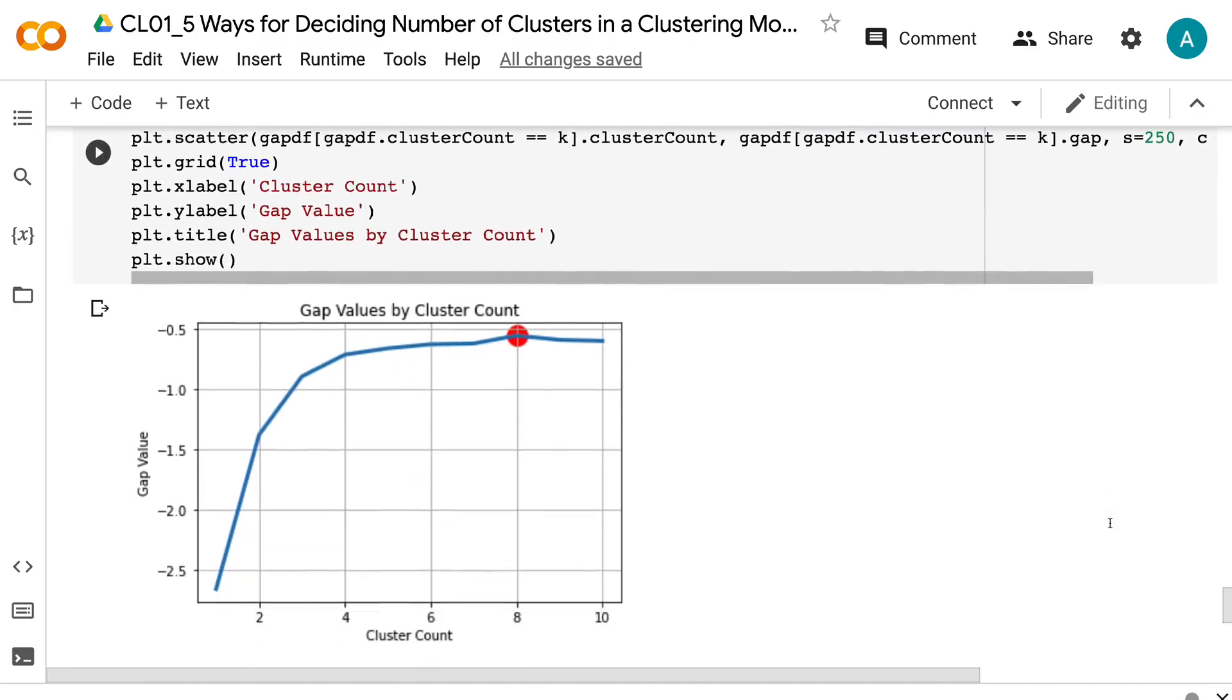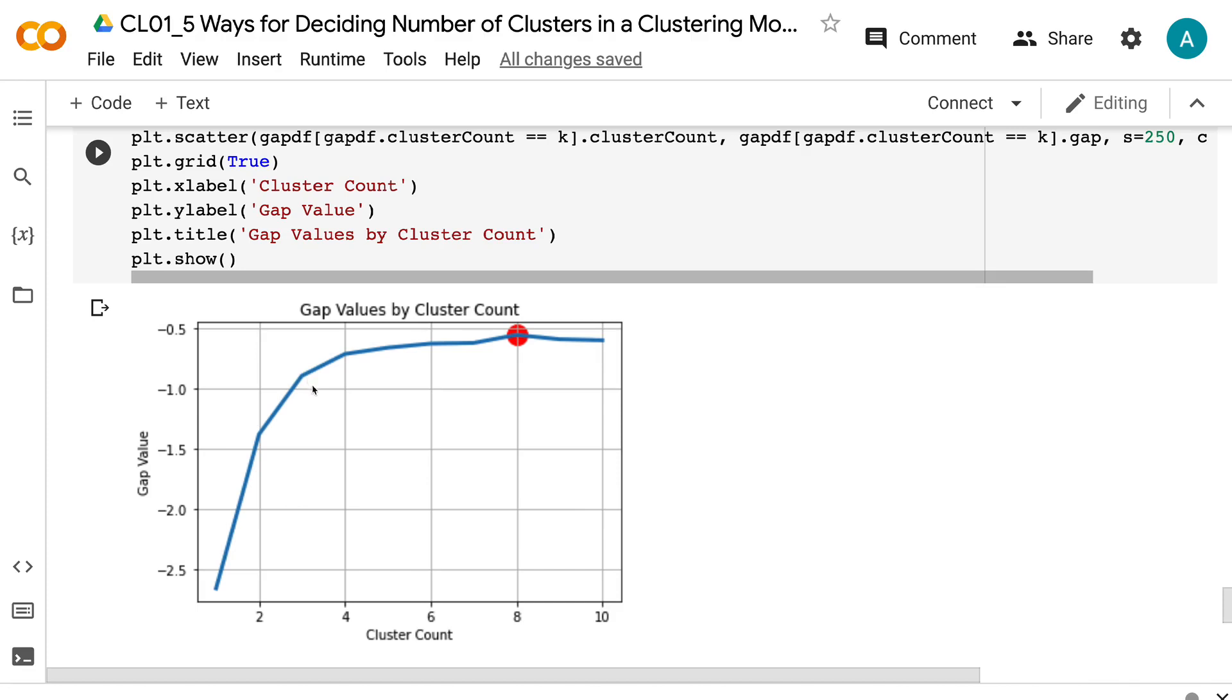But we can see from the visualization that after three clusters, the graph is relatively flat, showing a diminishing gap increase. Therefore, the optimal number of clusters is three if we use the elbow method.